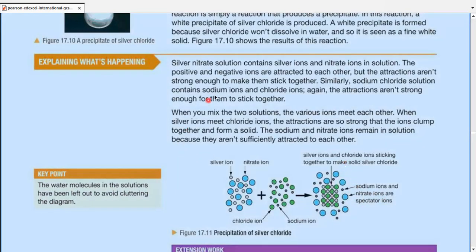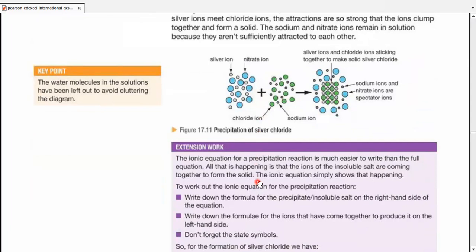As you can see, the silver ions and chloride ions are sticking together, and the sodium and nitrate ions actually fall apart. So they actually stay in the solution. What happens is that we get a precipitate, a white-colored precipitate, of silver chloride.